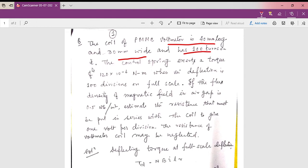The control spring exerts a torque, that is the control torque, of 120 into 10 to the power minus 6 Newton meter when the deflection is hundred divisions on full scale.